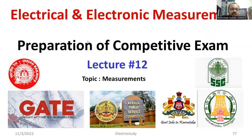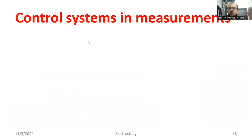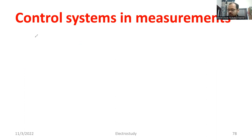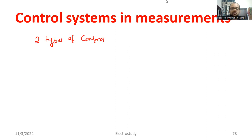First of all, I would like to discuss some important concepts in the case of measurements. Please note the points which I am going to explain. Regarding the control system in a measurement system, there are two types of control. What are the two types of control in a measurement system?